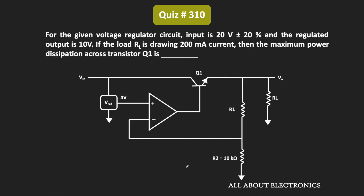Hey friends, welcome to the YouTube channel All About Electronics. In this question, we have been given this voltage regulator and we have been given that the input to this voltage regulator is equal to 20V plus minus 20%. The regulated output of this voltage regulator is equal to 10V. We have been asked to find the maximum power which is being dissipated across this transistor Q1, and the load is drawing 200mA current.